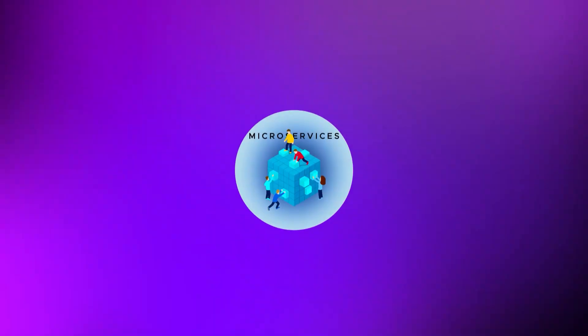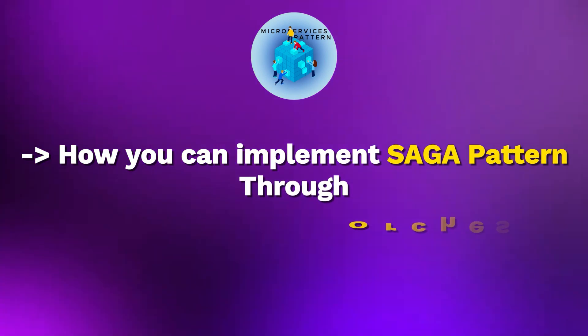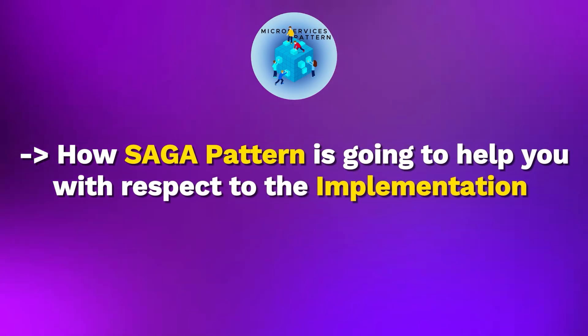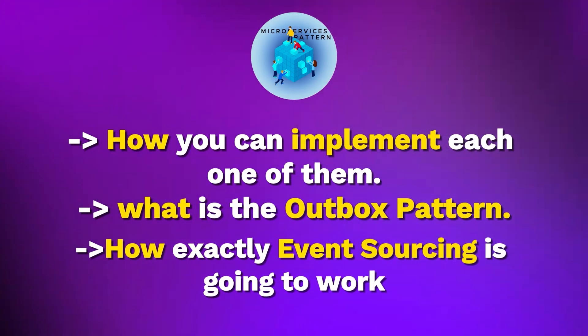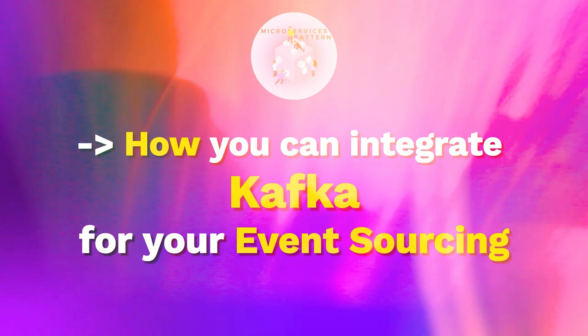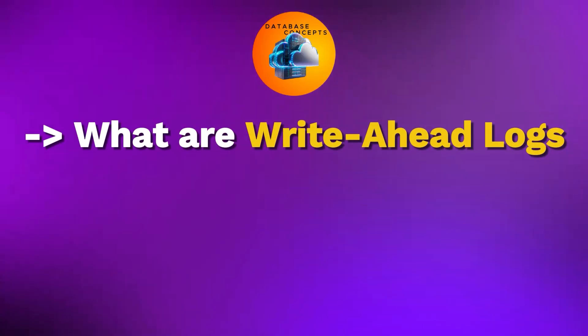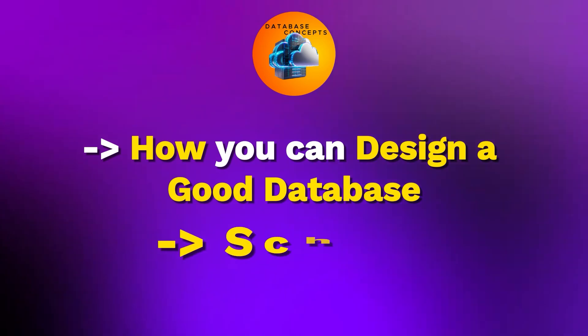We are going to talk about how microservices can communicate in synchronous and asynchronous fashion, and cover interesting microservices patterns like CQRS pattern, Saga pattern for distributed transactions, how you can implement Saga pattern through orchestration and choreography, how it compares with two-phase commit, what is the outbox pattern, how event sourcing works, and how you can integrate Kafka for event sourcing. We'll also cover database concepts like how NoSQLs are internally implemented using LSM trees, write-ahead logs, database replication, sharding, and schema design.